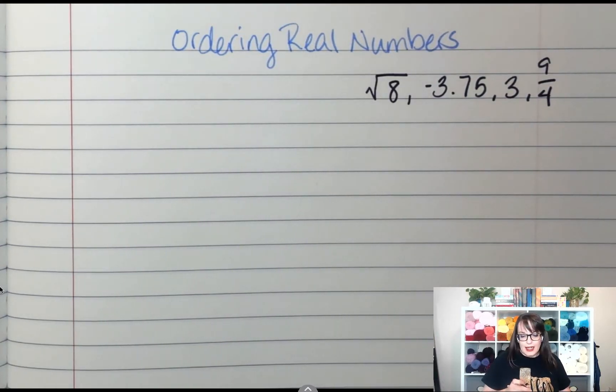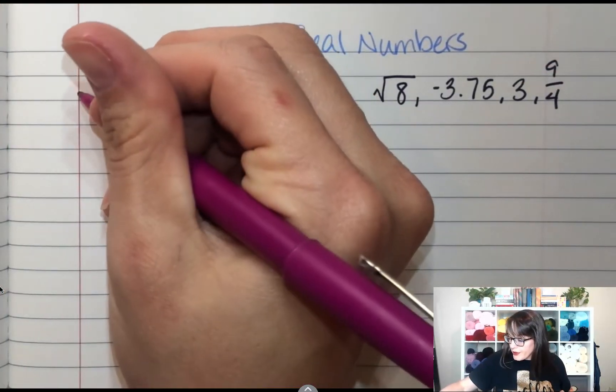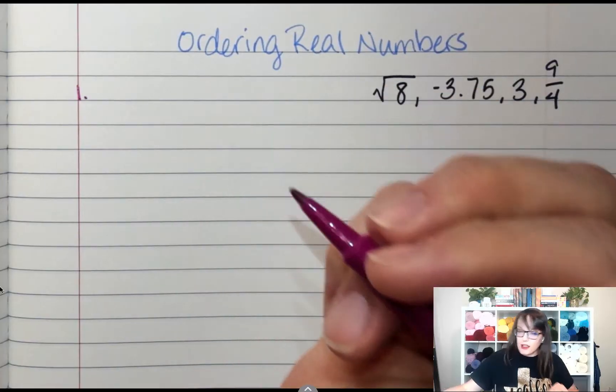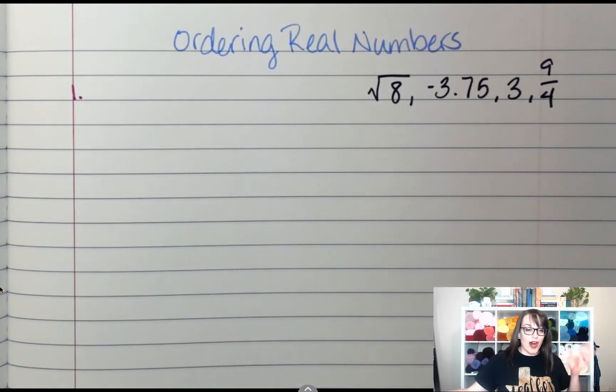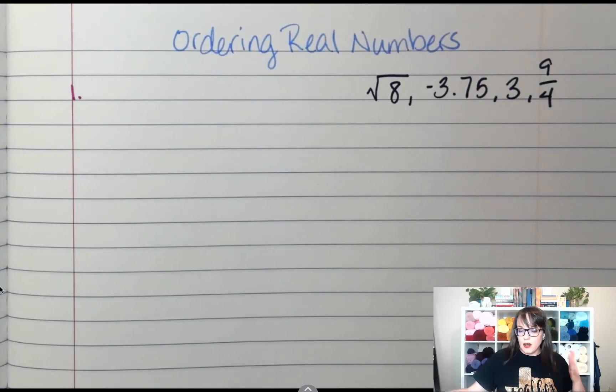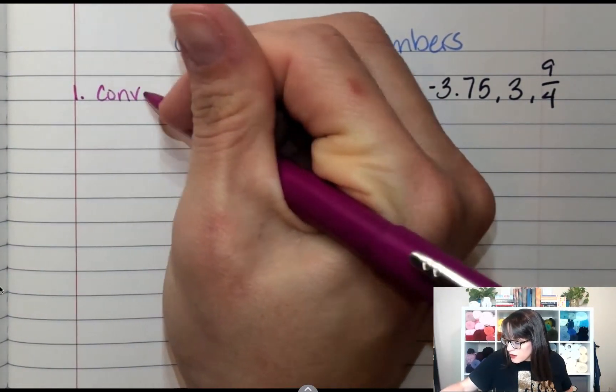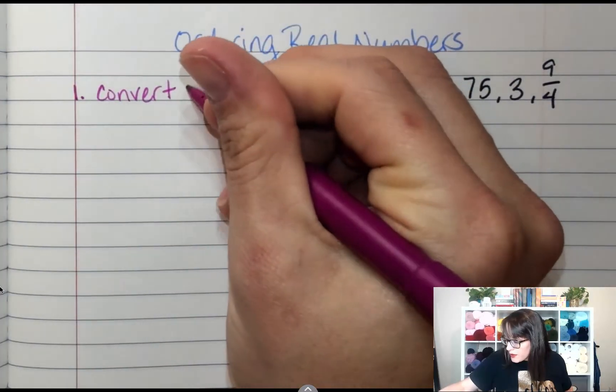I need to say put these in order from least to greatest, or in ascending order. The first thing I want to do, kind of like back years ago when you were comparing fractions and decimals, we want them to be in the same format. In this case, decimals are going to be our go-to, so I want to convert all numbers to decimals.